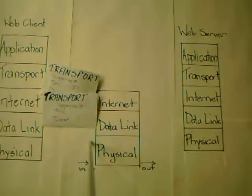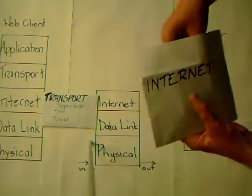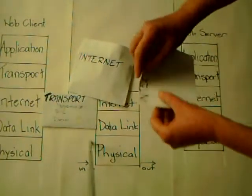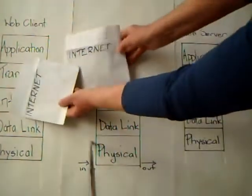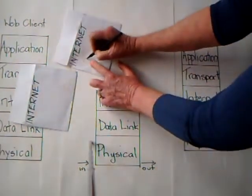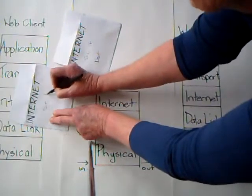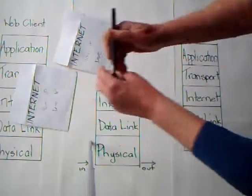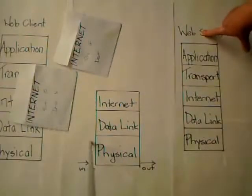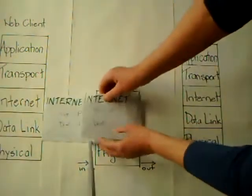The internet layer is where we add in IP addresses. The TCP segments are placed inside separate internet packets. Each packet is addressed with the source IP address and the destination IP address. The source IP is the web client's IP address, and the destination IP is the IP address of the web server — it doesn't change throughout the life of the packet. Once encapsulated, they are sent down to the data link layer.